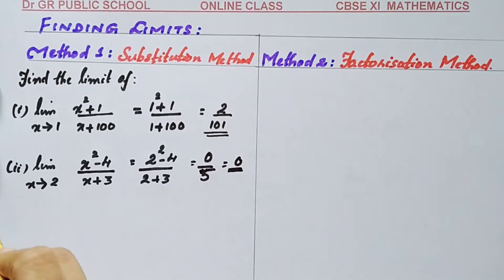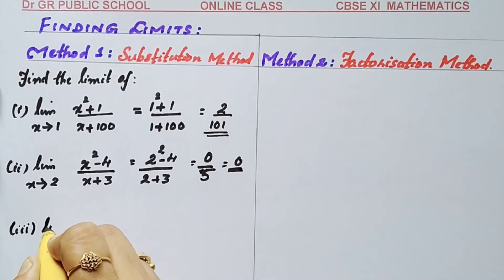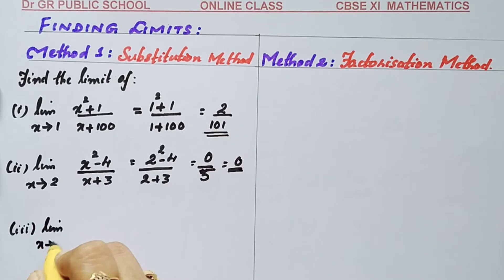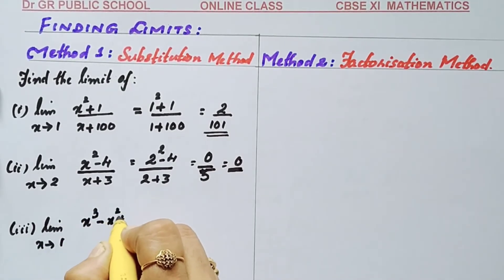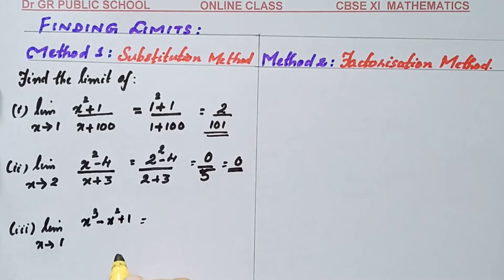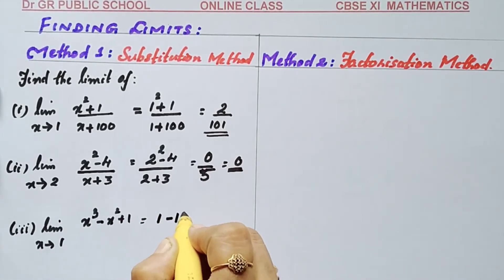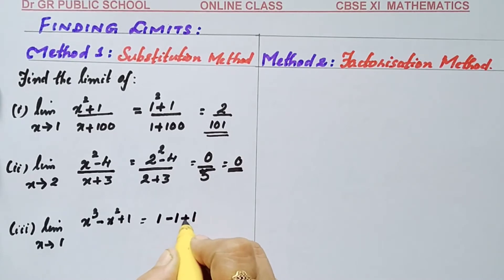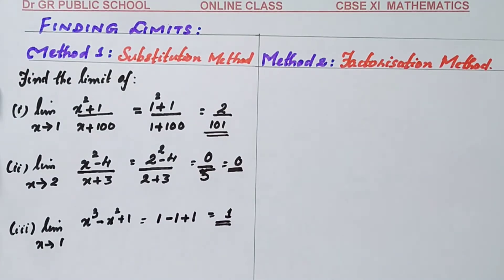Third question: limit x tends to 1 of x cubed minus x squared plus 1. Making direct substitution: 1 cubed minus 1 squared plus 1 equals 1 minus 1 plus 1, so the final answer is 1. This is the first method — giving the direct value for the limit.